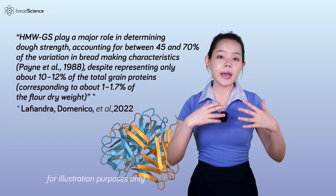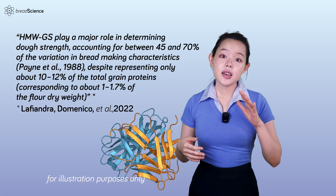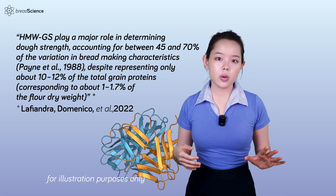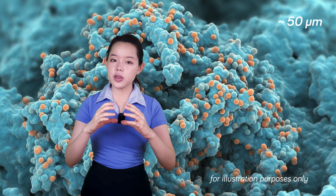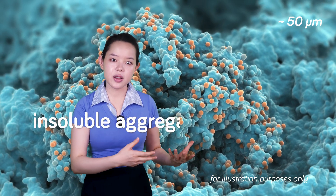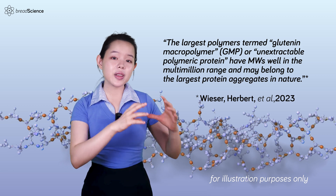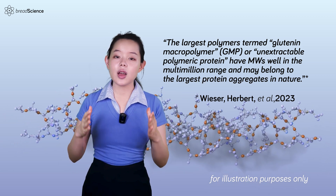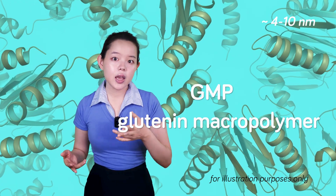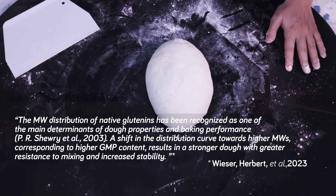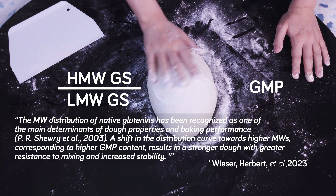High-molecular weight glutenin subunits play a major role in determining dough strength, accounting for between 45% and 70% of the variation in bread-making characteristics, despite representing only about 10% to 12% of the total grain proteins. Polymeric glutenin, unlike monomeric gliadin, does not exist as single soluble protein molecules in dough. Instead, it turns into insoluble aggregates often referred to as particles. The largest polymers, termed glutenin macropolymer or unextractable polymeric protein, have molecular weights well in the multi-million range. Many sources highlight the importance of the glutenin macropolymer, or GMP, for dough properties and bread-making quality. The ratio of high-molecular weight to low-molecular weight glutenin subunits within the GMP can significantly influence dough strength and elasticity.